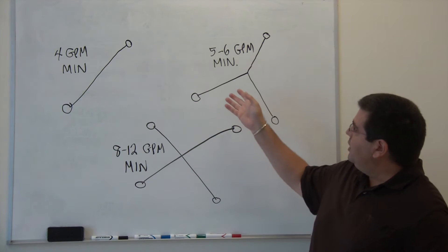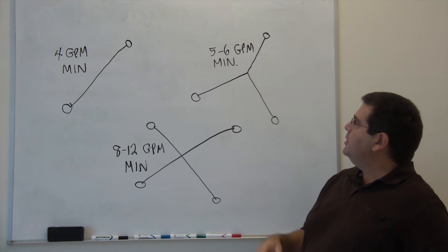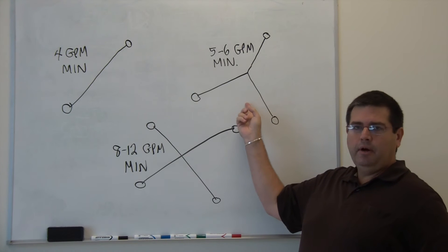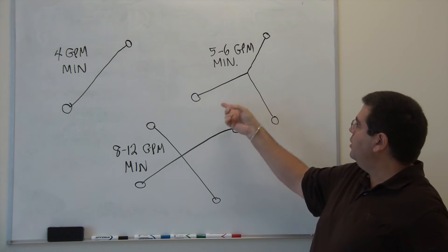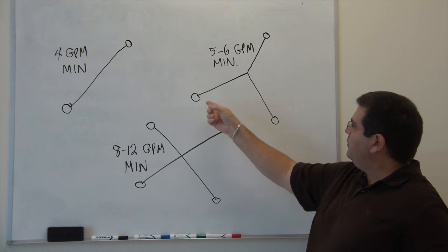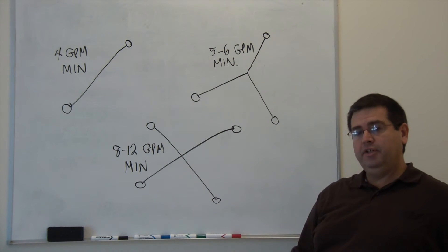If you have a machine that has a higher flow rate, let's say five to six gallons per minute, then you can use a tri-bar. Obviously, the more flow, the more nozzles you can introduce. So in this scenario, you would get more flow out of each nozzle and enhance your productivity as a result.